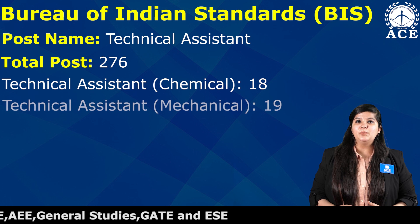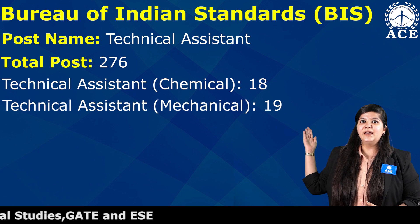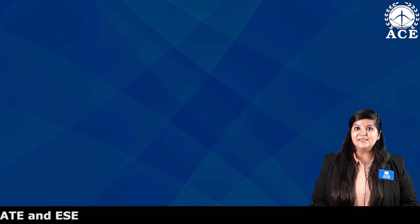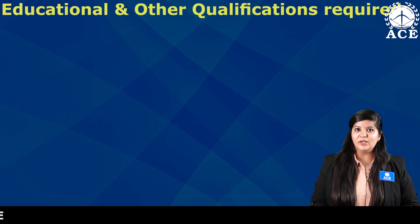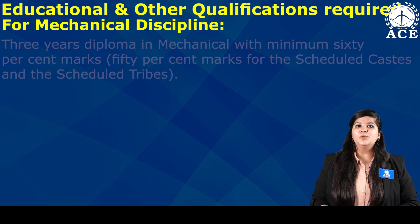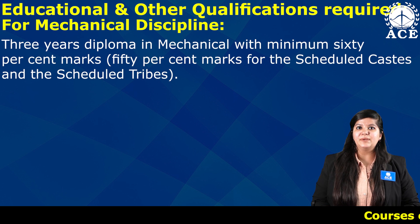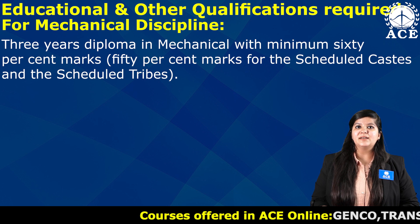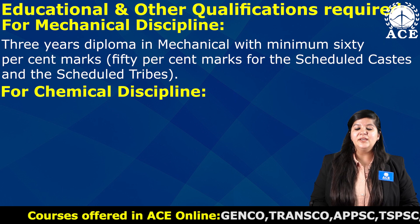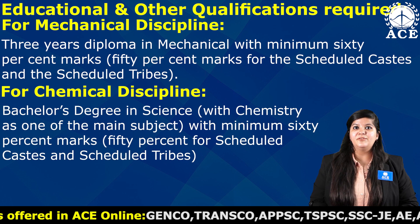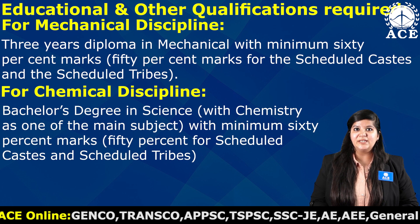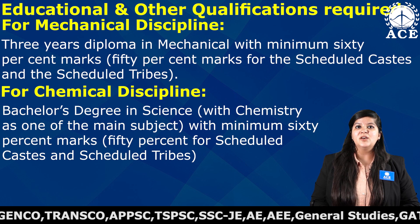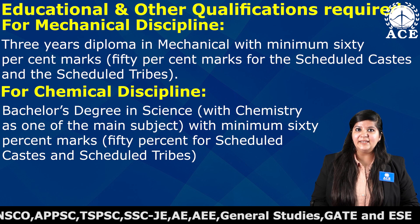The vacancies are for Chemical Engineering and Mechanical Engineering — 18 and 19 vacancies respectively. For the mechanical discipline, you need to have a three-year diploma in Mechanical Engineering with 60% marks. For SC/ST category candidates, 50% marks are required. For the chemical discipline, you need a BSc with Chemistry as the main subject with 60% marks.